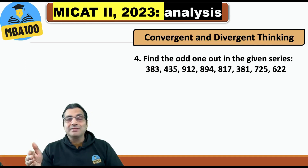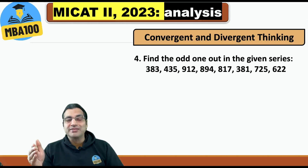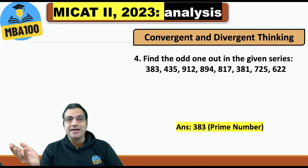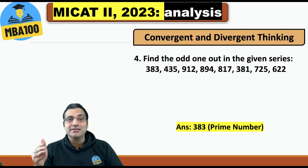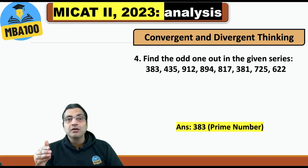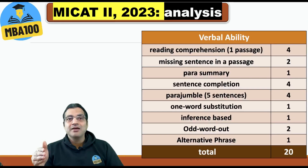Then this question: find the odd one out in the given series. When many people came with many different interpretations, the answer is 383 — because out of these eight numbers, only one is a prime. The rest are all composite.